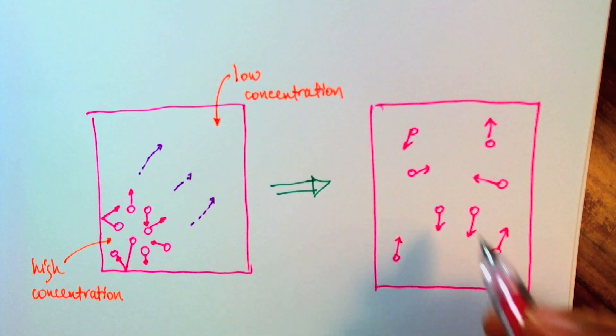Of course, there's a probability that they might start clumping together in corners of the container or maybe even in the center. But given the random nature of the motion, I would bet that they would kind of stay spread out more often than they would clump together.